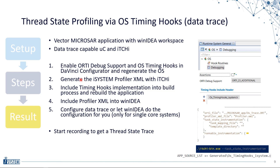The first step is to activate the OS timing hooks in DaVinci Configurator and regenerate the OS. The next step is to create a so-called iSystem profiler XML file to make iTCHy aware of the instrumentation we're using. We also have to provide the implementation for the timing hooks, which includes the OS timing hooks header file. Once we've done that and created the profiler XML file, we add it to WinIDEA, load the new binary with the instrumentation, and then we can record a trace and get the thread states.